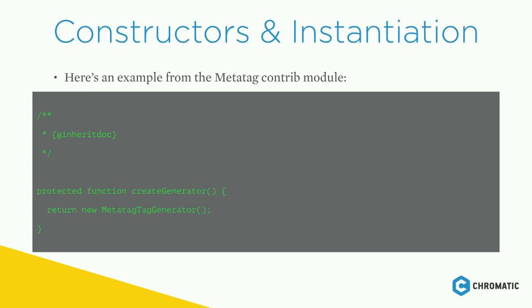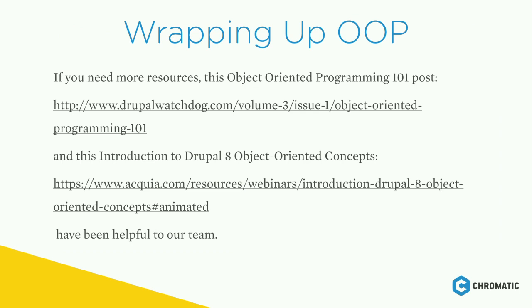Here's an example from the metatag contrib module: a function that returns a new instance of a MetaTagGenerator. The create_generator function is declared in an interface that is implemented by this class. This wraps up the OOP section. When I post the slides, you can check out the linked resources, which have been really helpful to our team.